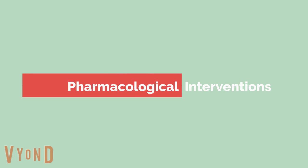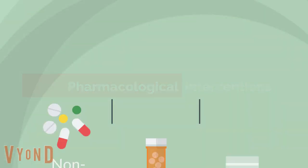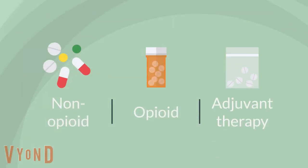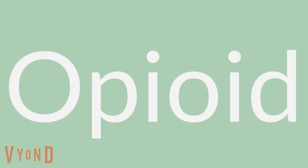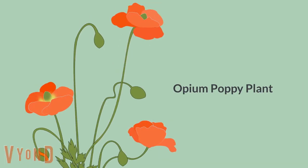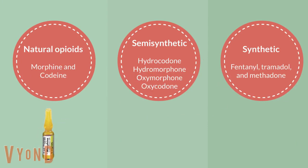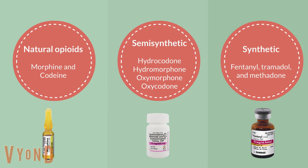Now let's talk about pharmacological interventions. We can classify pharmacological treatment into three main groups: opioid, non-opioid, and adjuvant therapy. Opioids are a class of drug naturally found in the opium poppy plant. There are three main groups: natural opioids like morphine or codeine; semi-synthetic opioids like hydrocodone, hydromorphone, oxymorphone, or oxycodone; and synthetic opioids like fentanyl, tramadol, or methadone.